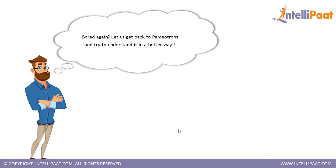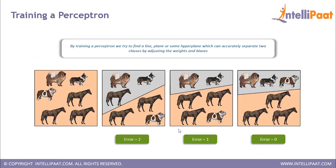Now let's learn more about perceptrons. Just like we were taught how to behave in certain conditions, perceptrons also require training. They have a learning algorithm through which they produce output. By training a perceptron, we try to find a line, plane, or hyperplane that can accurately separate two classes by adjusting the weights and biases.